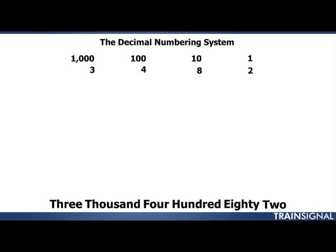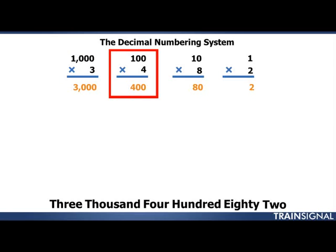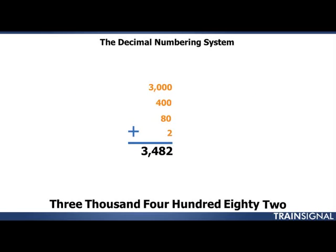In the regular decimal numbering system that most of us were brought up on, this number is pronounced 3,482. But how do we know that? We take our numbers and break them into certain column values. We have the ones column, the tens column, the hundreds column, the thousands column, and even beyond that — ten thousands, hundred thousands, millions, and so on. We put 3 under the thousands column, 4 under the hundreds column, 8 under the tens column, 2 under the ones column. Then we multiply: 3 times 1,000 is 3,000, 4 times 100 is 400, 8 times 10 is 80, and 2 times 1 is 2. Add those four numbers together and we get 3,482.